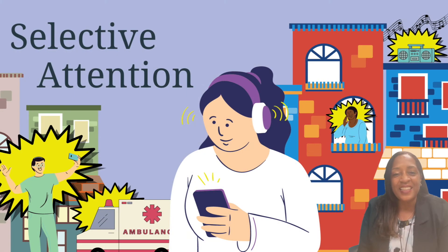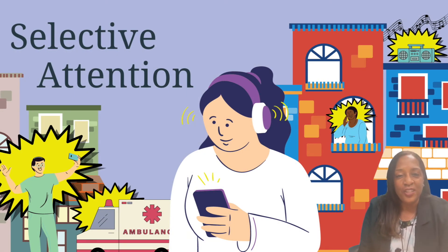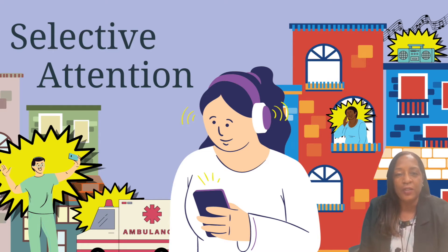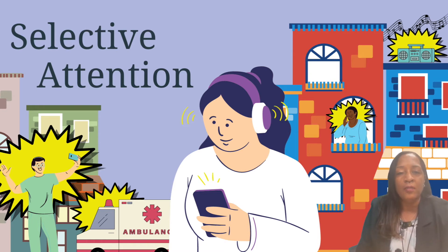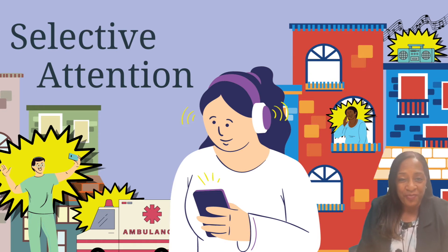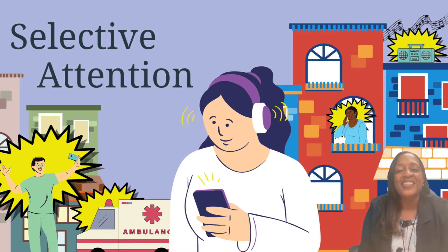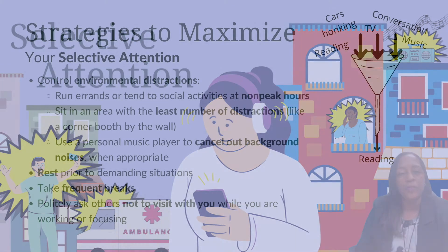Up from that is selective attention — the ability to focus on something and filter out the background noise that's going on. For example, you're sitting in a coffee shop and you're filtering out the conversations around you while you are looking at something on your phone, social media, or sending a text. You're able to focus just on that one thing you're doing regardless of what's going on around you.